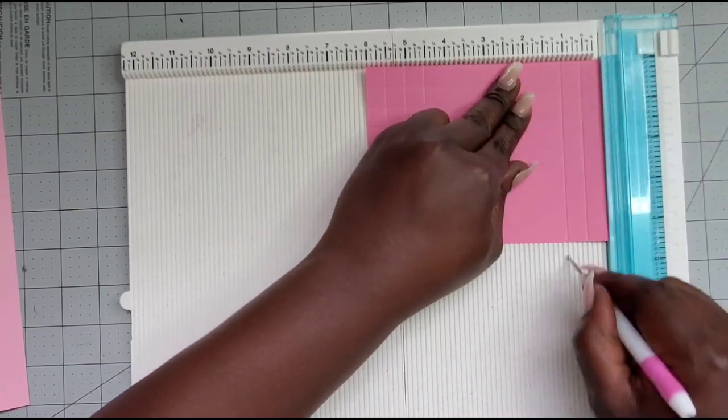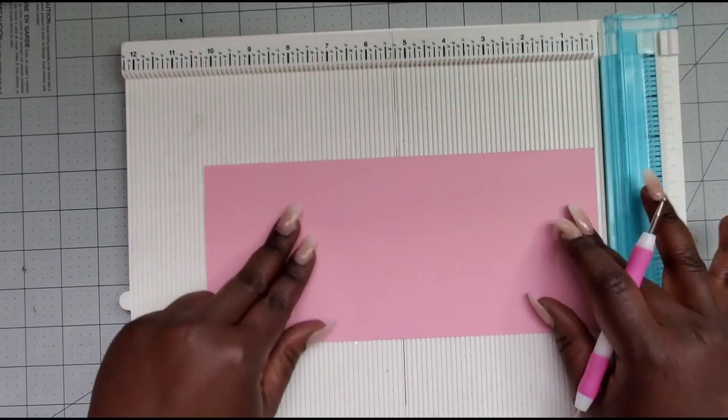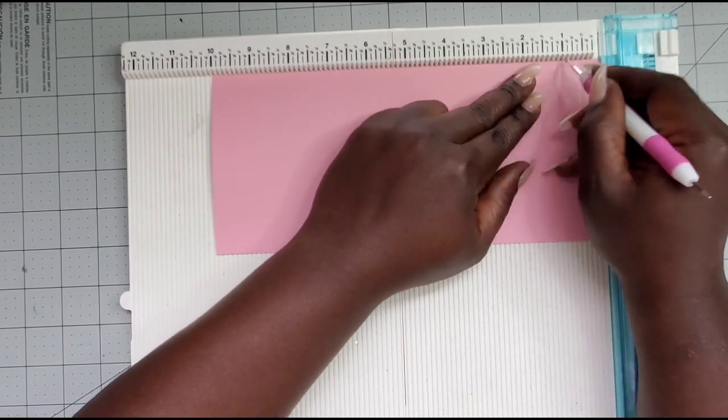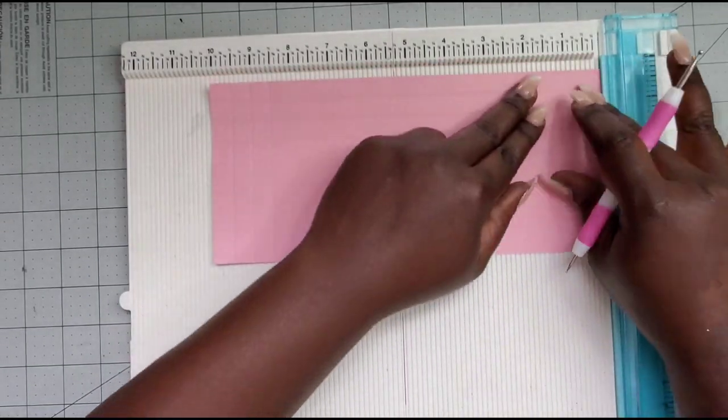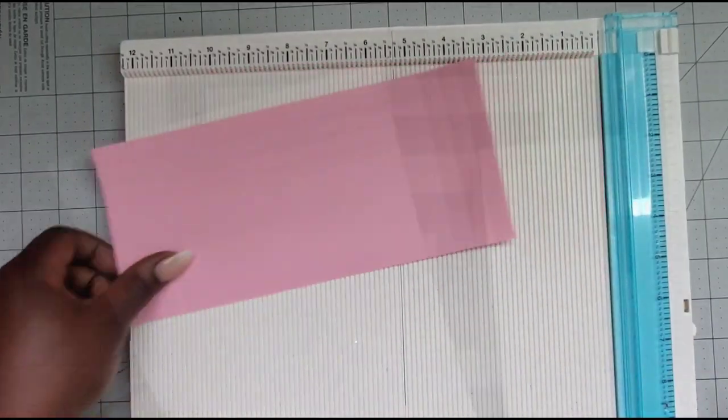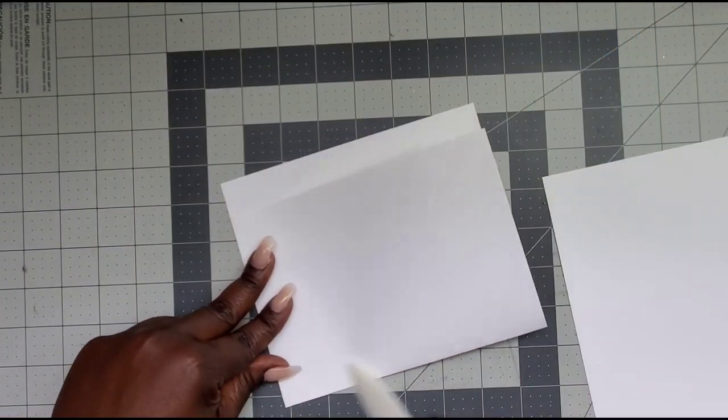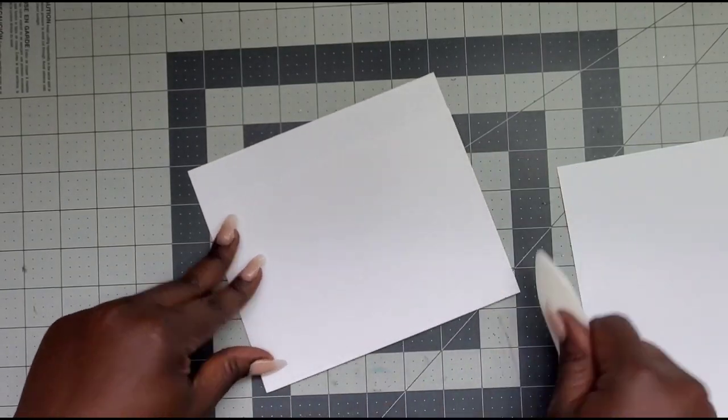You're also going to need on your 4 and a half by 9 piece to score it at half an inch, one inch, and 1 and a half on all three sides. I know you see a different color, I'm actually gonna be using acetate but of course you can't see that on film, so that's why I'm gonna go ahead and use the pink paper.